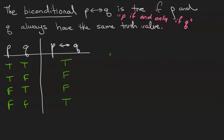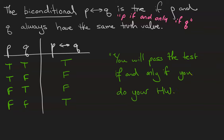The example here is the statement you will pass the test if and only if you do your homework. So this means not only what our first example did that doing your homework is sufficient to pass the test but also there's nobody that's able to pass the test without doing their homework. These two events are in perfect correspondence with each other.